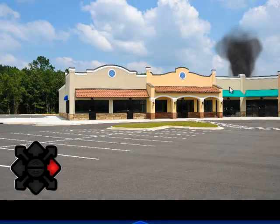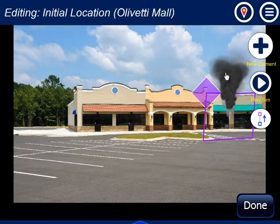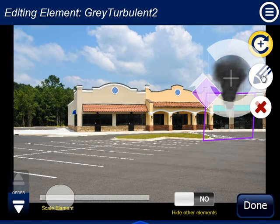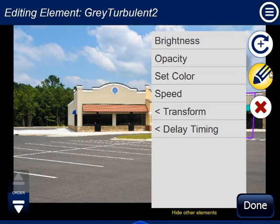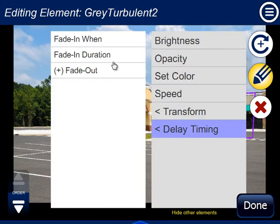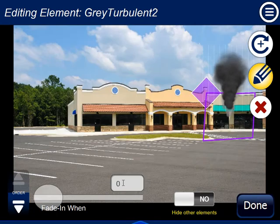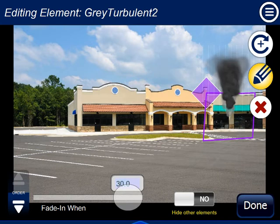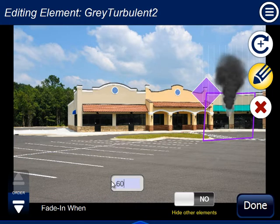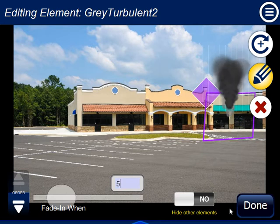If I run this right now, I'm just going to get the dark smoke. But I want that dark smoke to fade in over time — let's say over five seconds. So I'm going to click on the dark smoke, go to the pencil here and say delay timing, fade in when, and put in fade in five seconds. You can go up to 30 seconds, and if you need more, you just select the value and type in — let's say 60 seconds — and that'll go 60 seconds from the start of the scenario. Right now I'm going to just put five seconds in here.